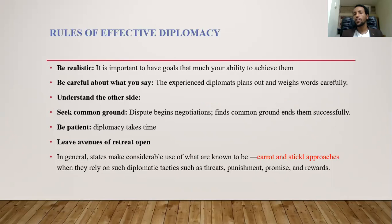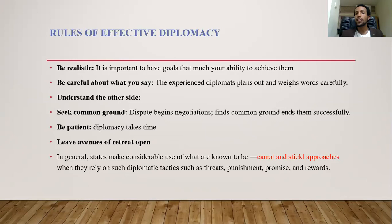If you want to be successful in diplomacy, there are rules that need to be followed. The first rule is to be realistic — it is important to have goals that match your ability to achieve them. When you go to a diplomatic table, the goal should be within your country's economic and military ability; if the goal is too large, it will not be fulfilled. The second rule is to be careful about what you say, as the words you use matter greatly in the outcomes of the diplomatic process.